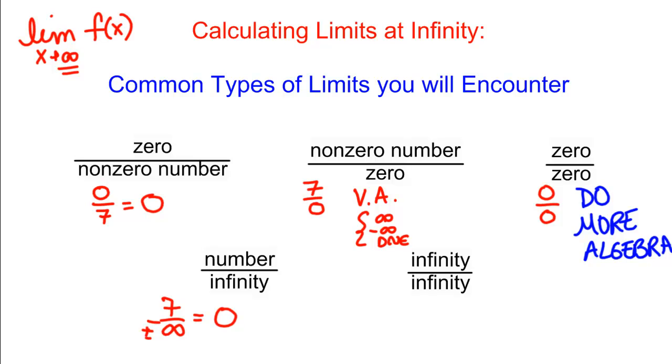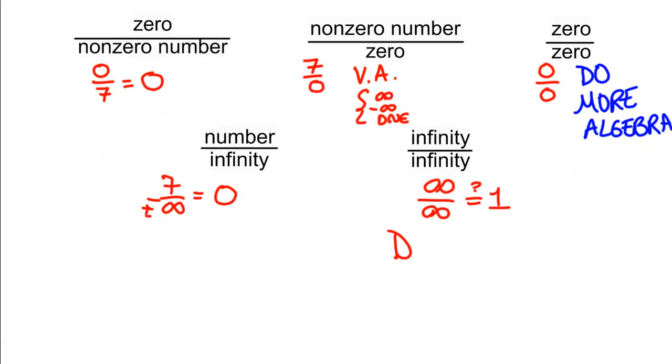And if your answer is infinity over infinity, this is where things can get somewhat interesting. What do you think that should be? A lot of people would guess that this is 1, but it doesn't have to be. And the reason is because there are different sizes of infinity. This is kind of strange. People have whole fields of mathematics studying different kinds of infinity.